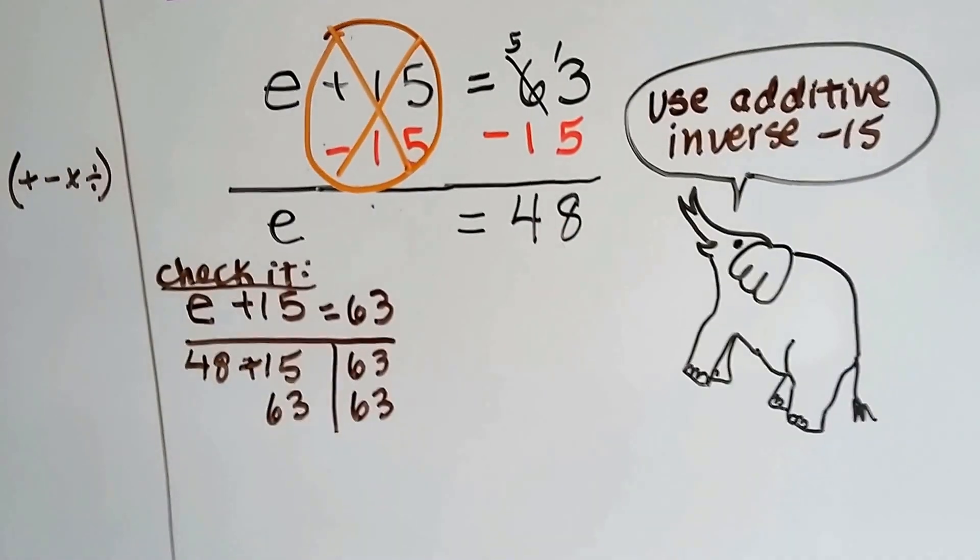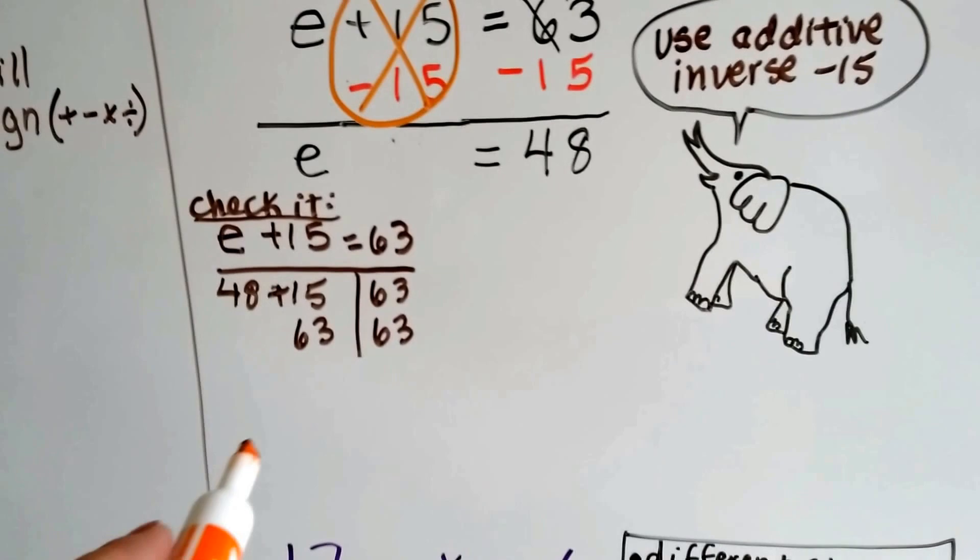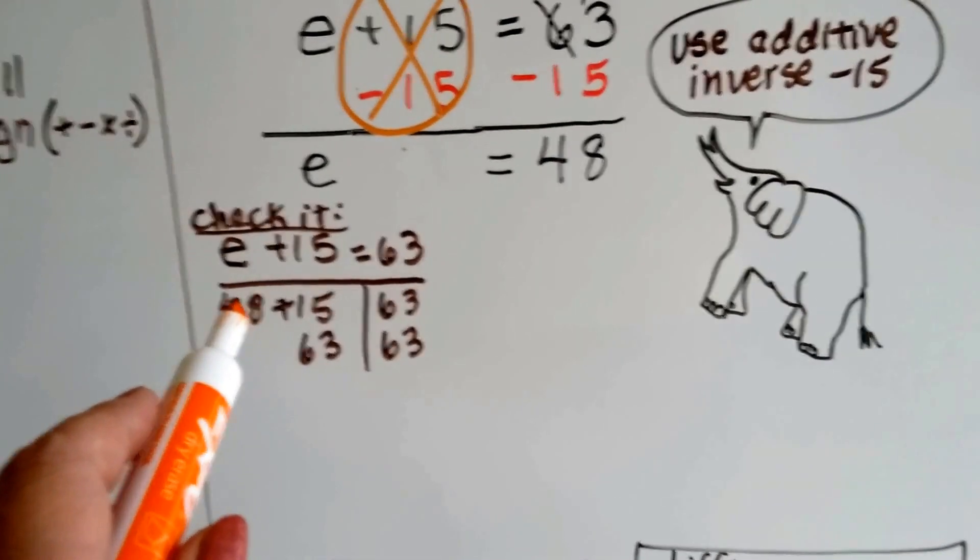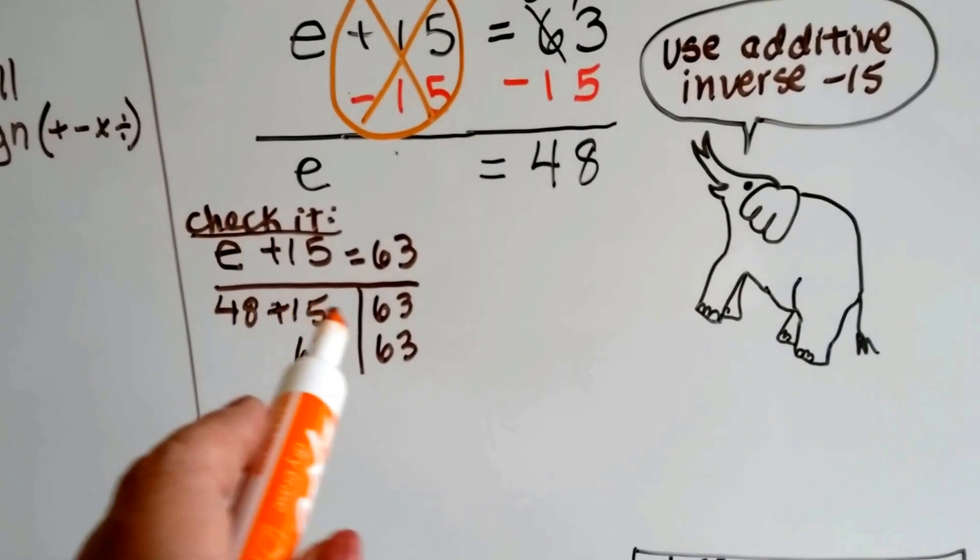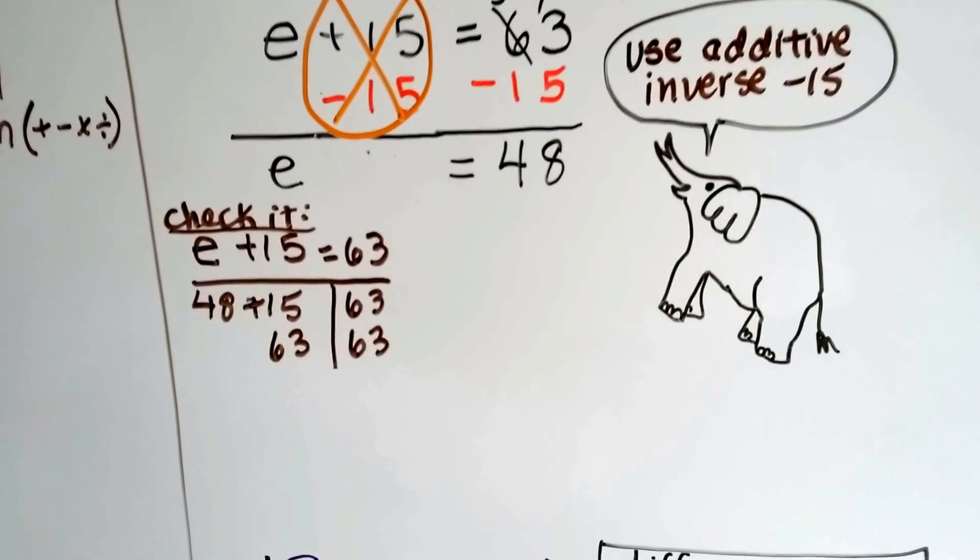The elephants, originally, there were 48 of them. And we can check it. We try plugging in the 48 to the equation, adding it to the 15 and we get 63 and we know we did it correctly.